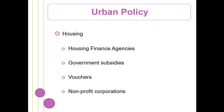Housing is another situation that cities — particularly large cities — are dealing with, especially homelessness coming out of recession and trying to have enough affordable housing. Housing finance agencies are being set up to make financing homes more affordable, getting government subsidies to provide more housing at lower cost. Vouchers and Section 8 type programs give people assistance they can use to pay for housing. Nonprofit corporations are also springing up to try to provide housing for low-income people without making a profit.